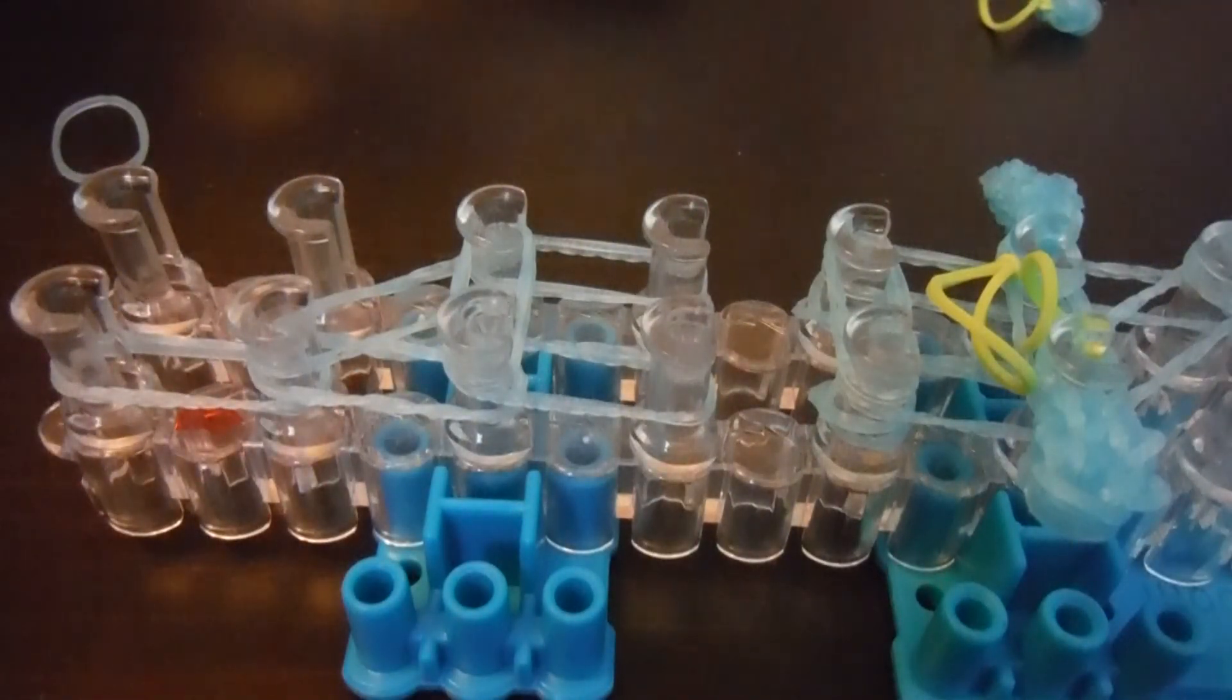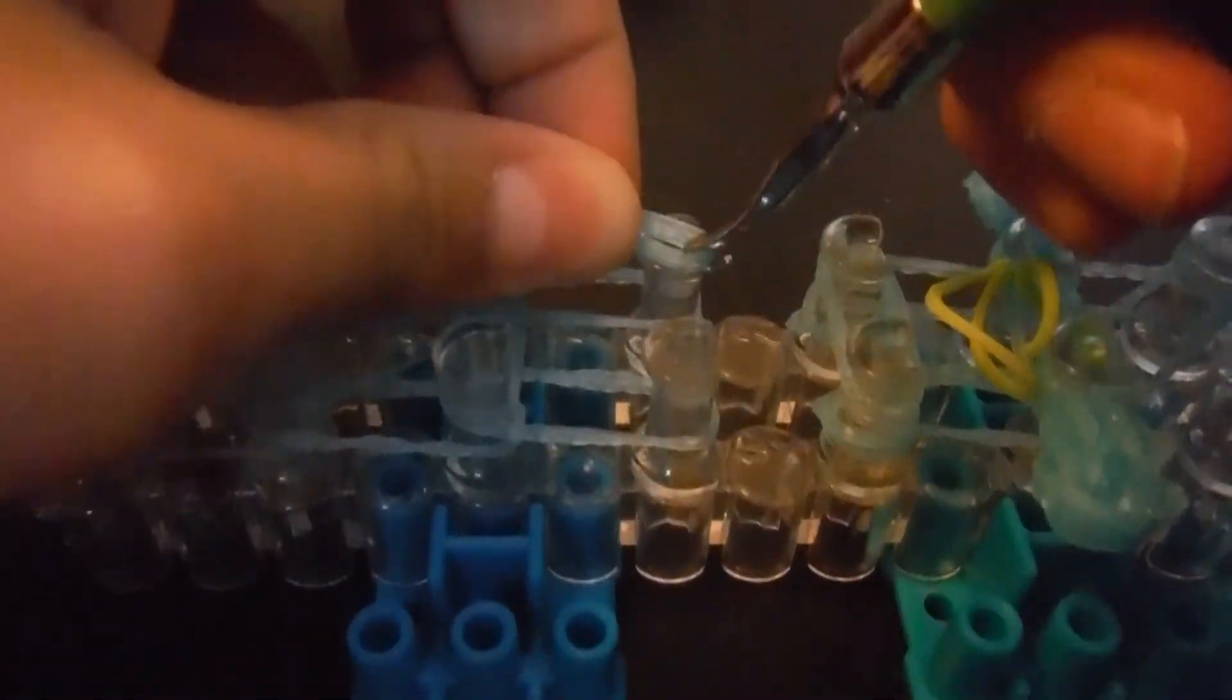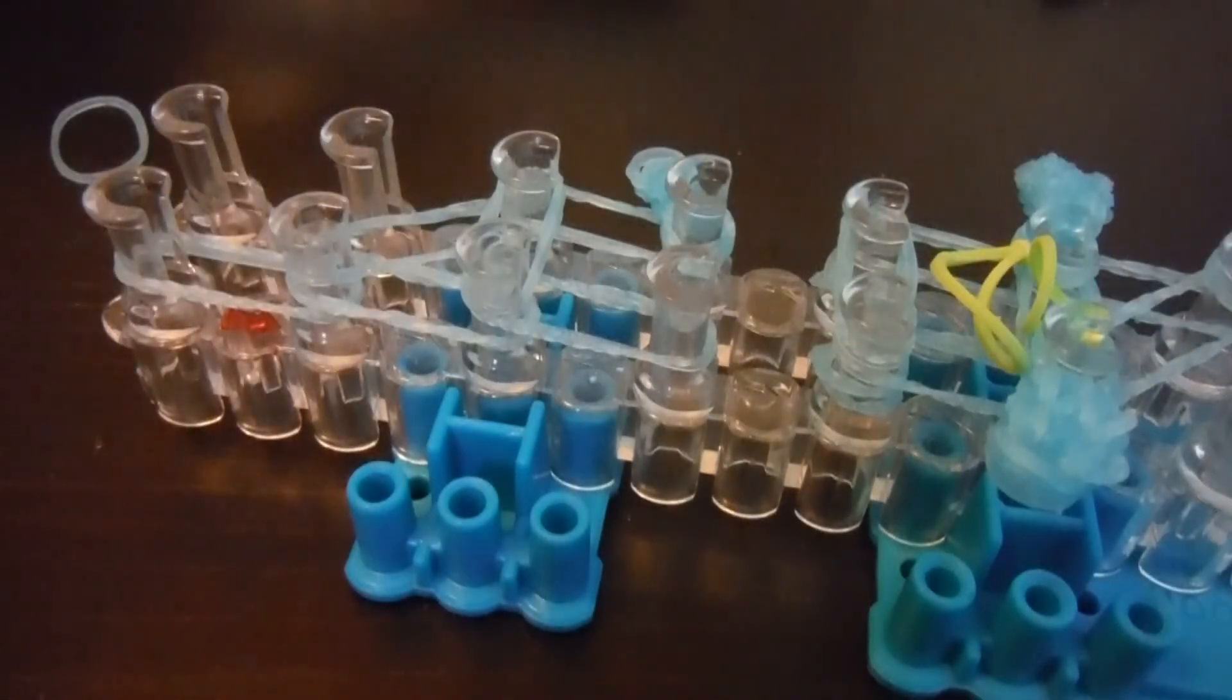And then what you want to do is you want to take your little leg, go ahead and remove the tying off band because you don't need that anymore. And then you want to place one leg here and you want to place the other leg on the opposite peg.